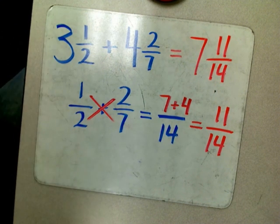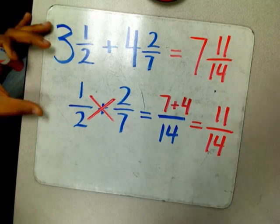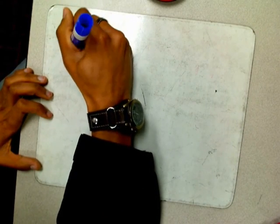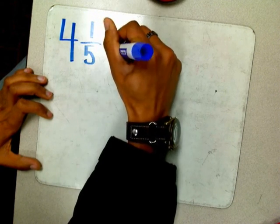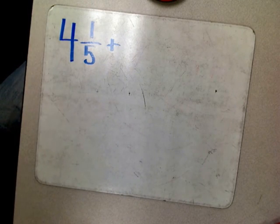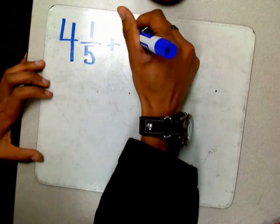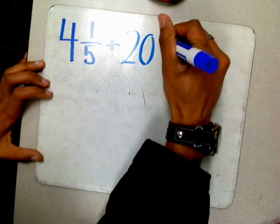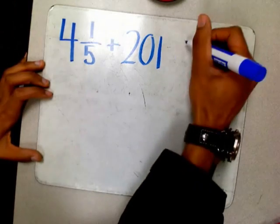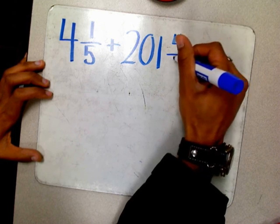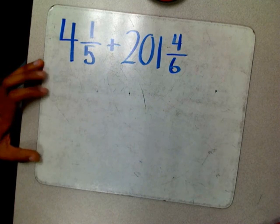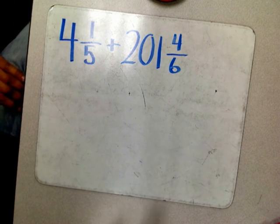I think that was pretty simple. Let's do one more problem to make sure that we have our knowledge in our mind. Right now Mr. Smith is stalling - I have to think of another problem. I like to improv a little bit. Here we have it, thought of my new problem. Let's go with four and one fifth plus a bigger number - two hundred one and four sixths.